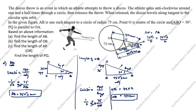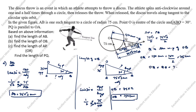Now, Q is the midpoint of OB. Since OB = 150 centimeters, OQ = 150/2 = 75 centimeters. Therefore, OQ = QB = 75 centimeters.